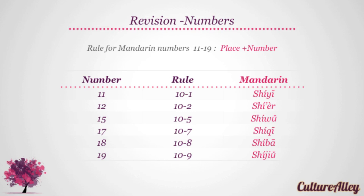18, or ten and eight, becomes shi ba. And finally, 19, that is ten and nine, becomes shi jiu.